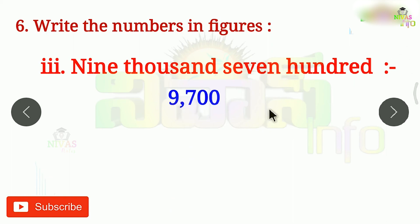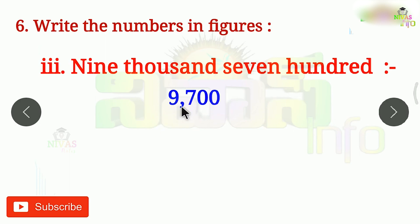So here's 9,700. If we have the thousands place, we'll have two more places. I have a 9 and I have a 7. We have zero in the ones and tens. This means we have 9,700. The scope is that we have 97 in the thousands and hundreds.